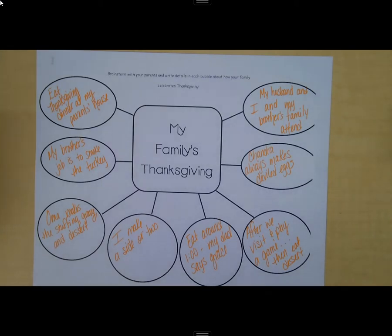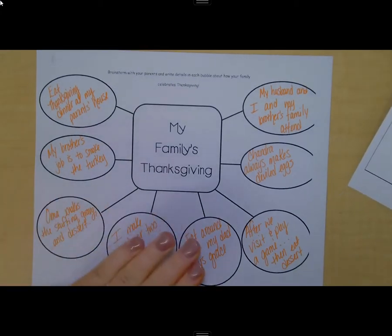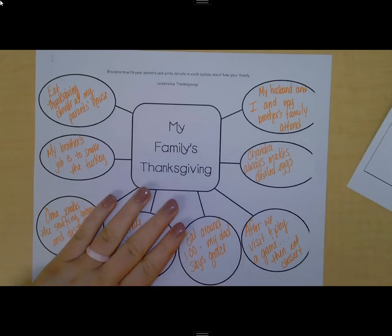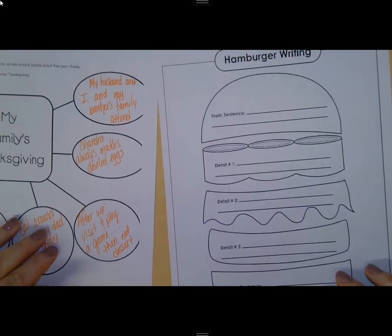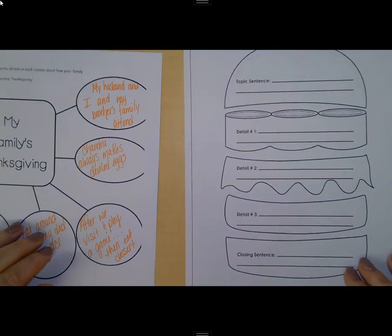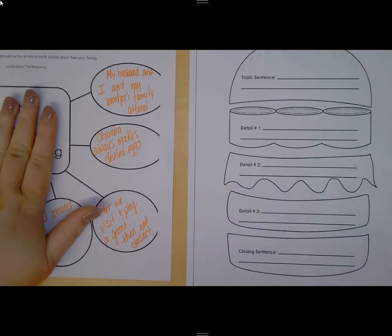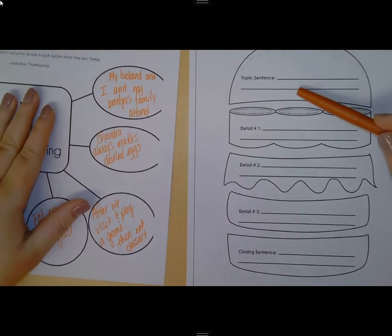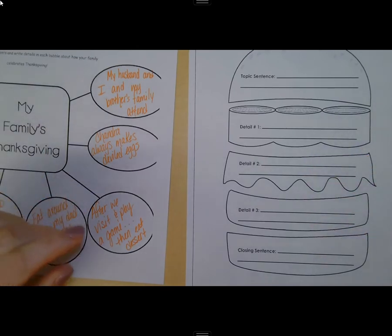With day two of writing, it's time for our hamburger outline. We're going to take the information from our web and create a five-sentence paragraph. Here's your hamburger outline. Again, if you don't have a printer, you can just draw this on a piece of paper. Now, I'm going to take this information and create a topic sentence. I'm going to pull three details and a closing sentence.